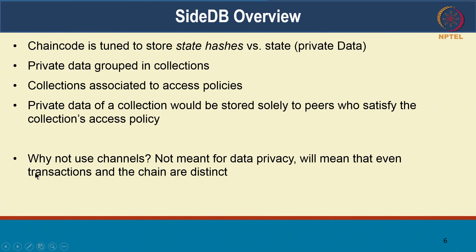The private data is only stored on the peers who satisfy that access policy. The distinction from channels is that within a channel everyone sees all data, but SideDB is a construct whereby you can prevent certain private information from being seen by all parties in the channel — it can be seen by only a subset. The private data is not in the block of transactions and is also not seen by the orderer. Unauthorized entities, even if they are authorized within a channel, will only see the hash and will not see the private data.